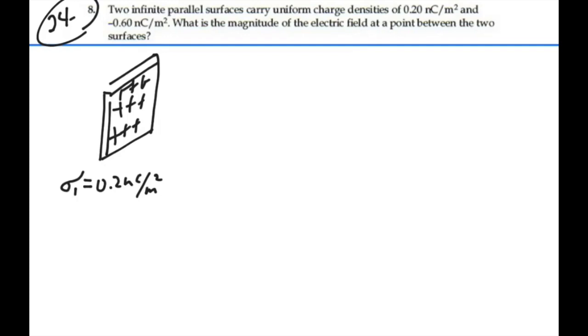And then we have a negative sheet of charge. I'm going to put this in blue. And the surface charge density on this, called sigma-2, is a negative 0.6 nanocombs per meter squared.